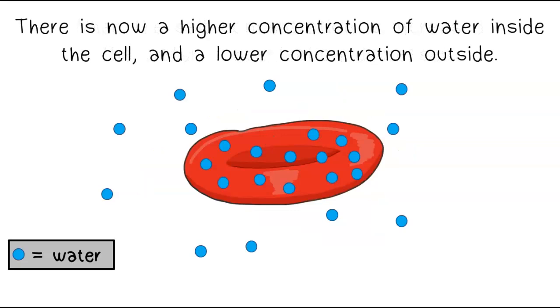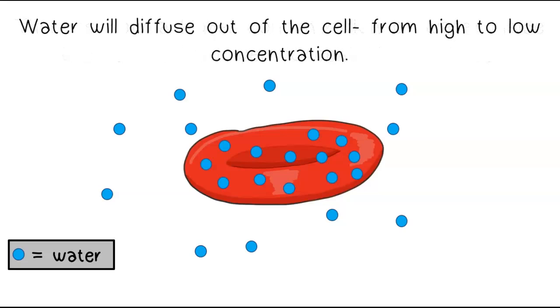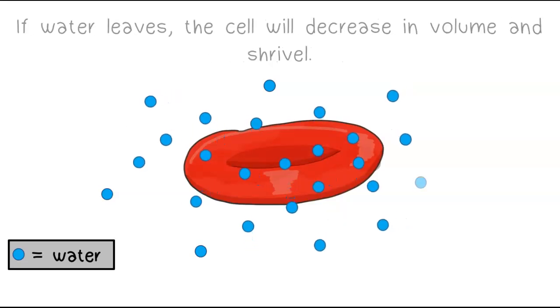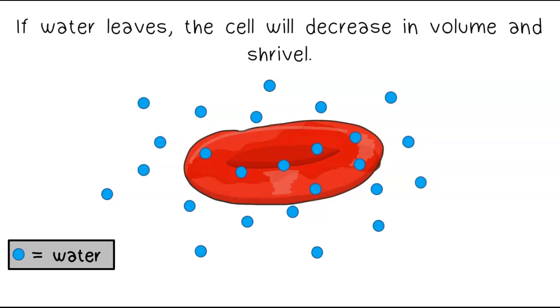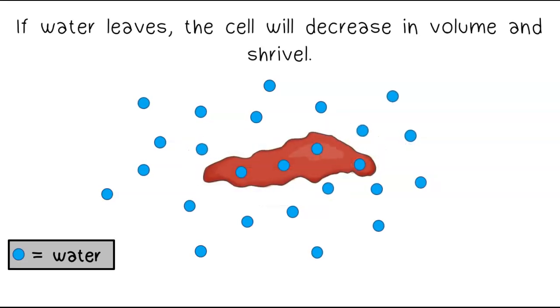There is now a higher concentration of water inside the cell and a lower concentration outside. Water will diffuse out of the cell from high to low concentration. If water leaves, the cell will decrease in volume and shrivel.